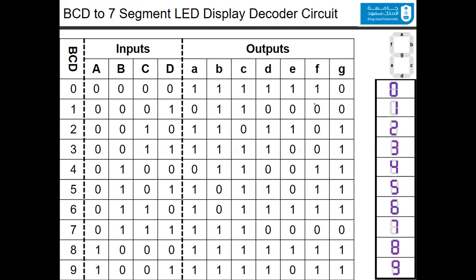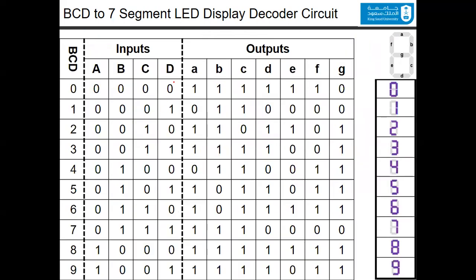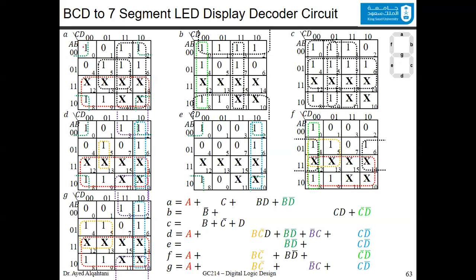After you have the truth table filled, you can generate seven Karnaugh maps for each one of these segments. Going back to the table, you will generate a K-map for A, B, C, D, up to G. Each one of them has a separate K-map. For A, the generated Karnaugh map is as you can see here. We filled it based on what we had in the truth table.